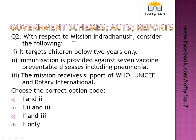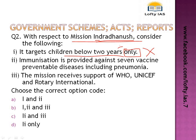Question 2: with respect to Mission Indra Dhanush. Like the rainbow's seven colors, Mission Indra Dhanush targets seven vaccine-preventable diseases. The first statement says it targets children below two years only — while it is mainly intended for children below two years, it also includes pregnant mothers for vaccination, so this statement is not fully correct. The second statement says it provides immunization against seven preventable diseases including pneumonia — but pneumonia is not included. Go home and read the seven diseases; four of them are diphtheria, pertussis, tetanus, and tuberculosis. There are three more — write them in the comment section.